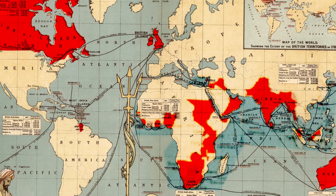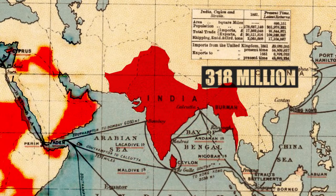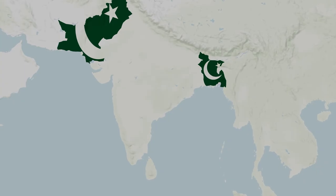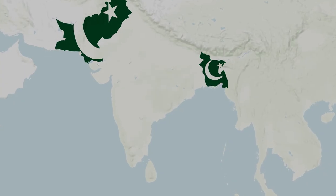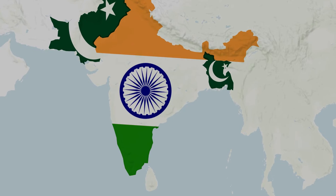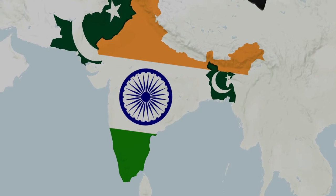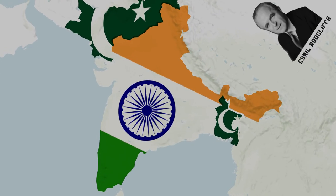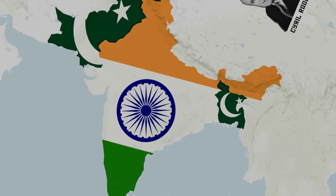But of these 449 million inhabitants, 318 million came from one region: British India. Fast forward to 1947 — both India and Pakistan are independent nations, and their borders are drawn along the Radcliffe Line, named after Sir Cyril Radcliffe.